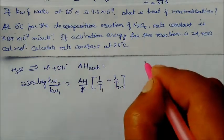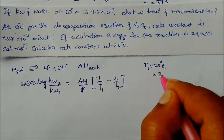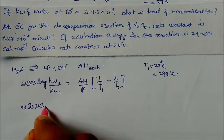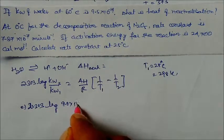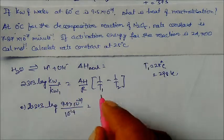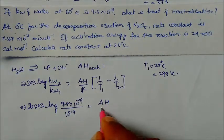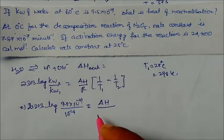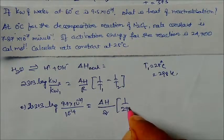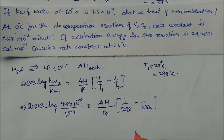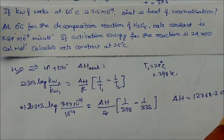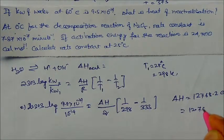The lower temperature is 25°C = 298 K. Substituting: 2.303 × log(9.5×10⁻¹⁴ / 10⁻¹⁴) = ΔH / R × (1/298 − 1/333). With R = 2 cal/mol·K, solving gives ΔH = 12768.2 cal, or 12.76 kcal. This is our answer.